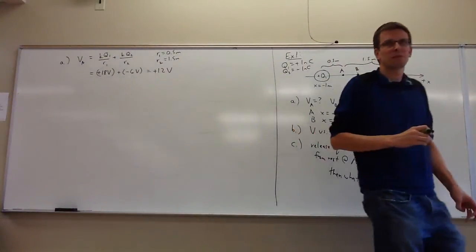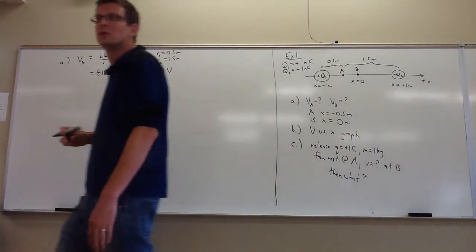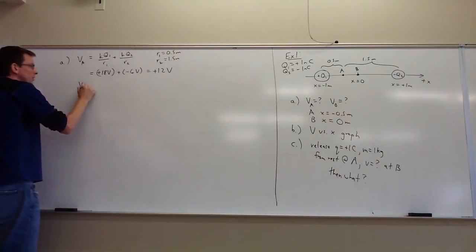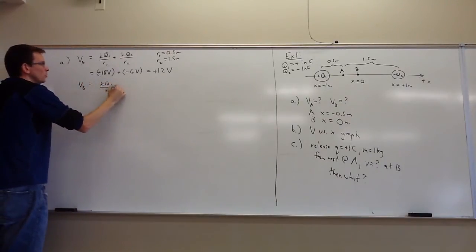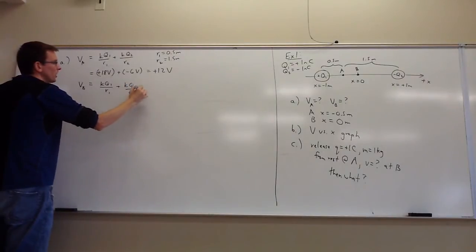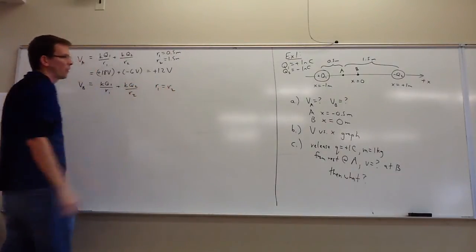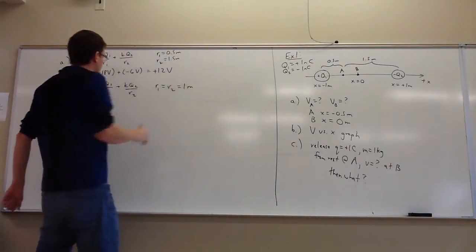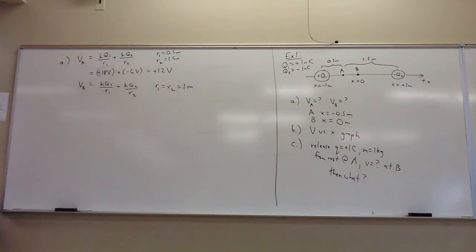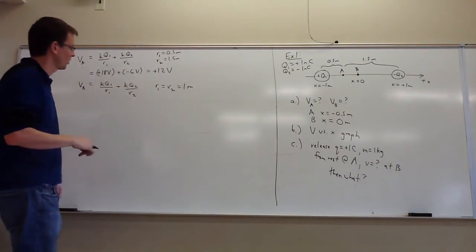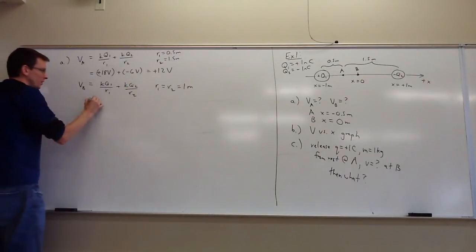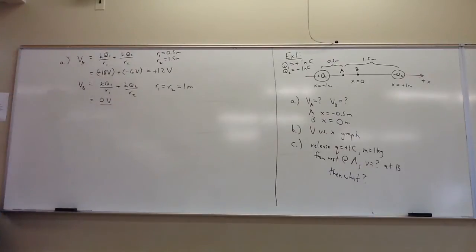Now the voltage at point B. The only thing I need is the distances. At the origin, how far am I from both charges? One meter each. Can anyone see what the voltage will be without computing it? Zero — because everything else is the same but one charge is plus and gives positive voltage while the other is minus, so they cancel perfectly.